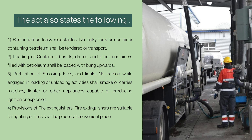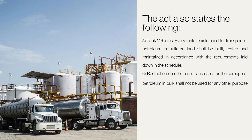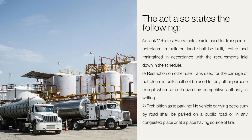Next is provision of fire extinguishers: fire extinguishers suitable for fighting all fires shall be placed at convenient places. Next is provision of tank vehicles: every tank vehicle used for transport of petroleum in bulk on land shall be built, tested, and maintained in accordance with the requirements laid down in the schedule. Next, restriction on other use: a tank used for the carriage of petroleum in bulk shall not be used for any other purpose except when authorized by the competent authority in writing.